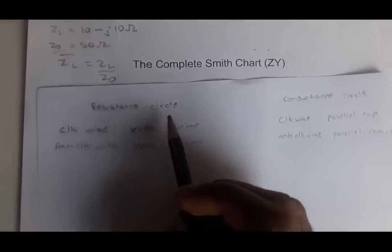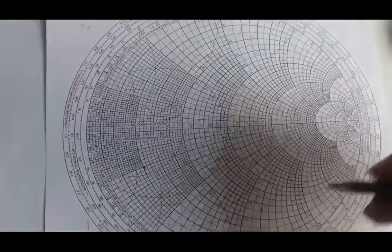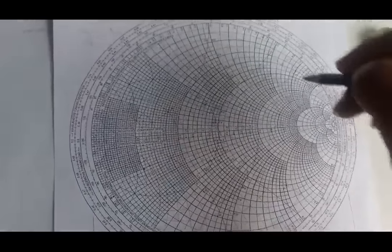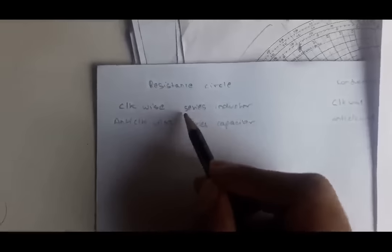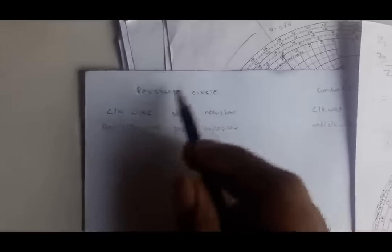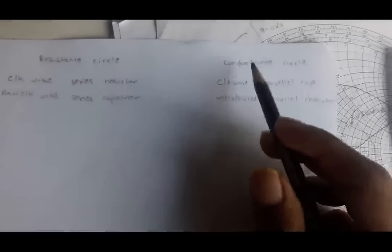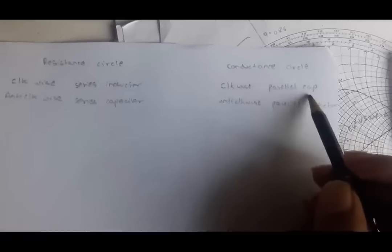To match the impedance to the center we follow certain movement rules. Moving clockwise on a resistance circle means adding a series inductor; moving anti-clockwise on a resistance circle means adding a series capacitor. Moving clockwise on a conductance circle means adding a parallel capacitor; anti-clockwise on a conductance circle means adding a parallel inductor.